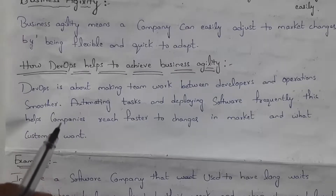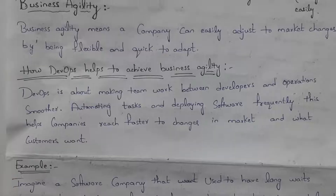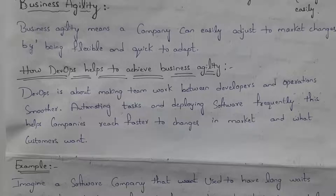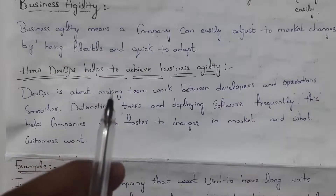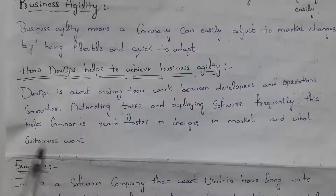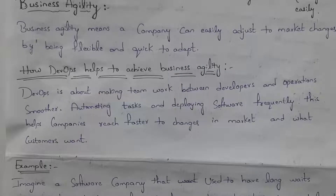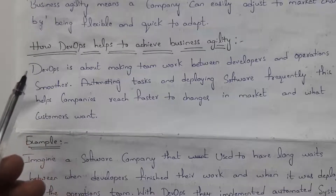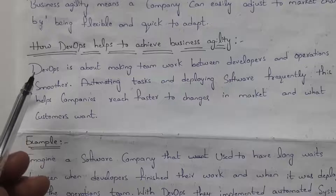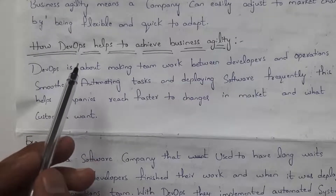In DevOps, the development team and operations team work together using various kinds of automation tools to automate complete tasks and keep updating software frequently. So whenever a customer wants a new feature, the company can immediately respond and update the software using those automation tools. This allows companies to reach faster to changes in the market.